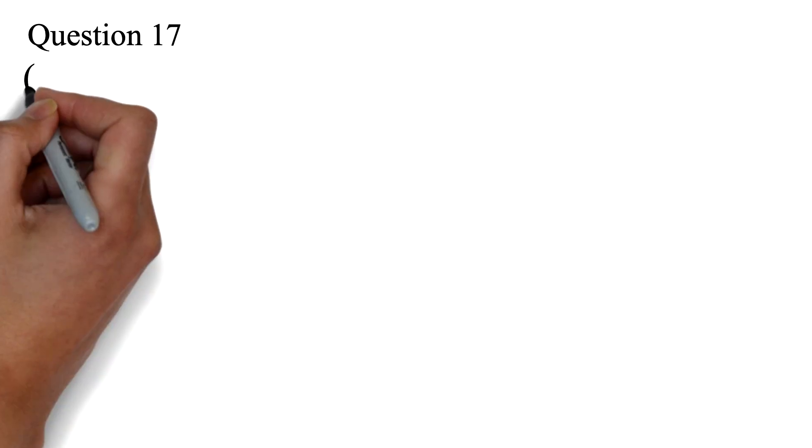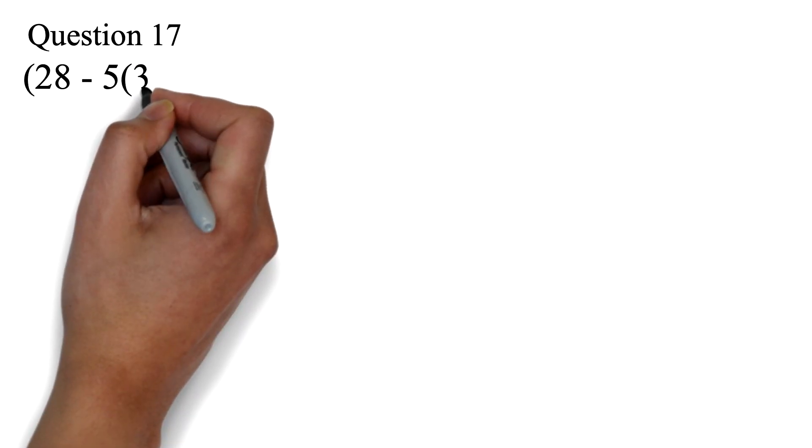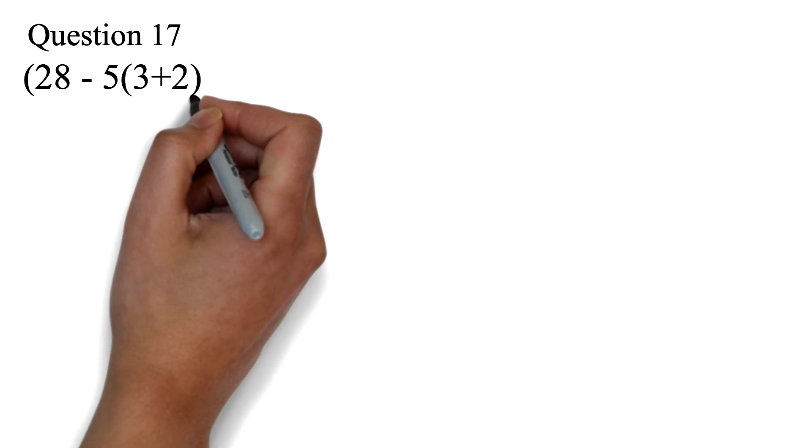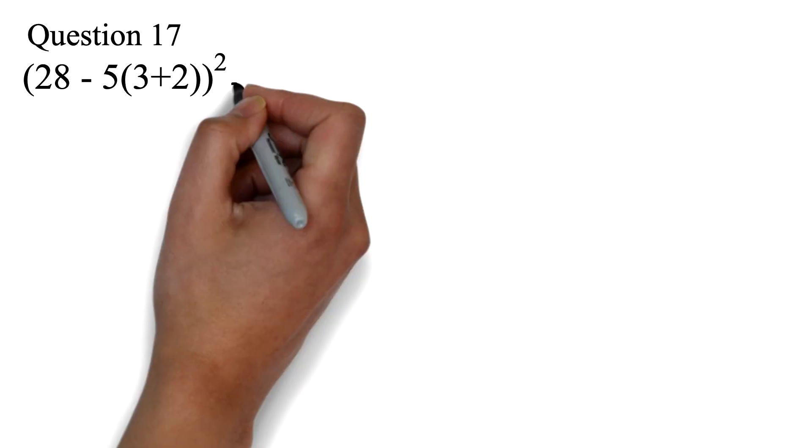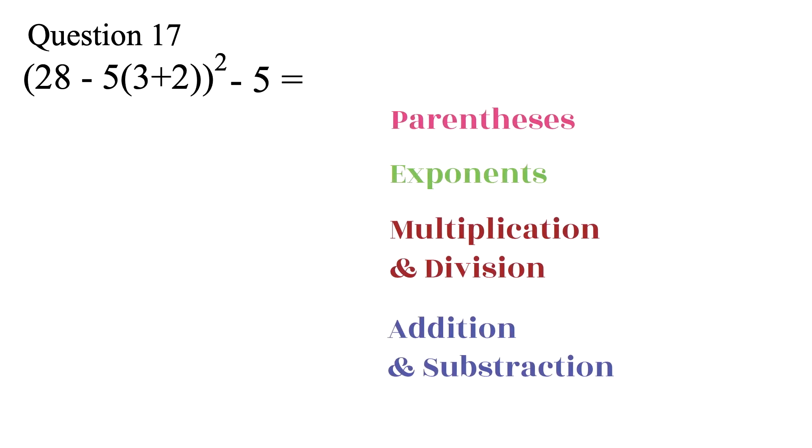Question 17. We are supposed to calculate this without using a calculator. Parentheses, 28 minus 5, parentheses, 3 plus 2, exponent 2, minus 5, equals. Let's bring our order of operations.